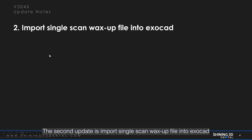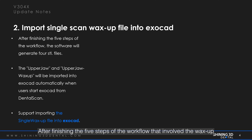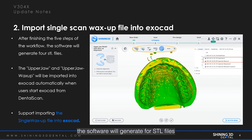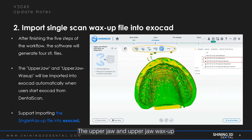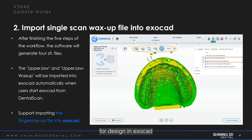The second update is importing a single scan waxup file into Exocad. In the previous version, after finishing the five steps of the workflow that involves the waxup, the software would generate four STL files. Within these four STL files, the upper jaw and upper jaw waxup would be imported into Exocad automatically. Now, we support importing the single waxup file into Exocad, which is convenient for those who need this single waxup file for design in Exocad.